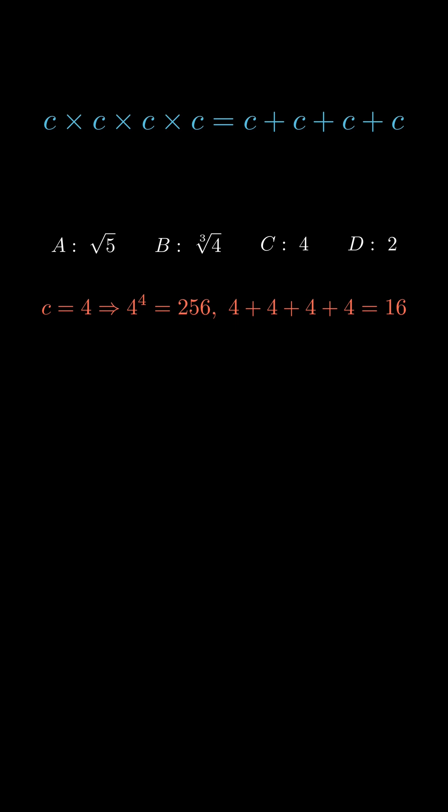Let's try something smaller. Option D equals 2. Left side equals 16. Right side equals 8. Still not equal.